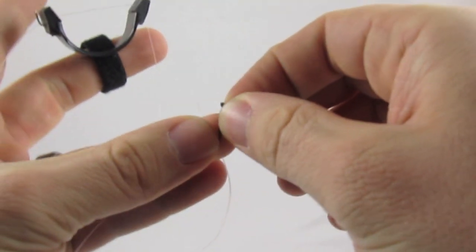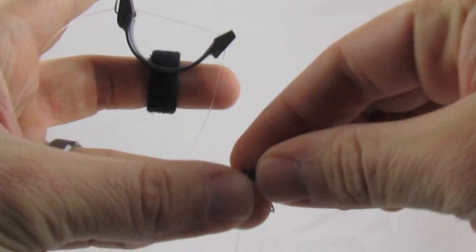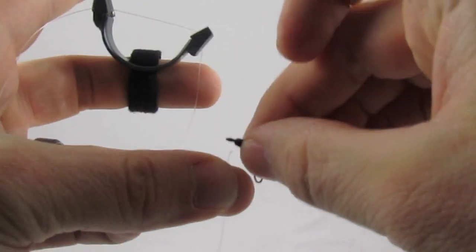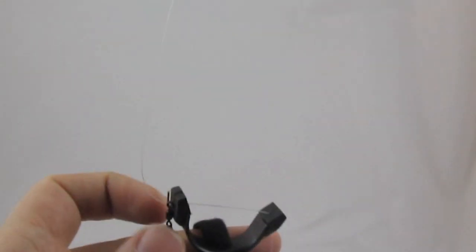We're going to thread the end of this, our fishing line, through where we want the swivel tied on, just like that. Bring it down. There's a little hook here that helps keep it in place to thread that on.